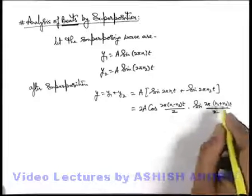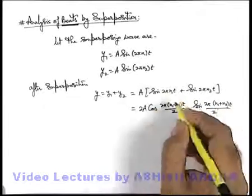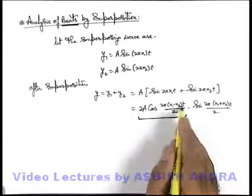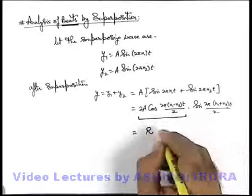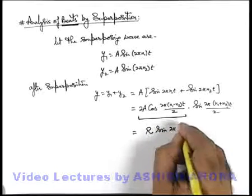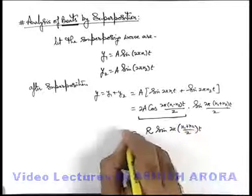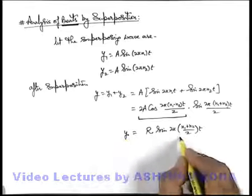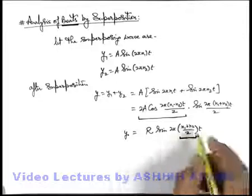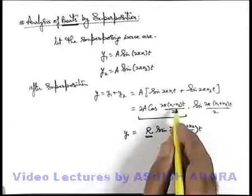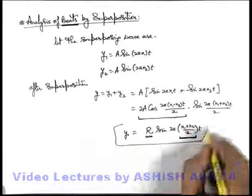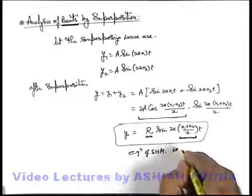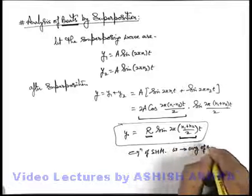Here you can see that n1 plus n2 by 2 is the frequency which is the average of the two, and this is the difference. So this whole term, which is varying with time at a relatively very low frequency, we can write it as R. So this will be R sine of 2π (n1 plus n2) by 2 times t. This is the resulting displacement of a medium particle. We can say this medium particle is oscillating with the frequency which is the average of the two frequencies, and R is the amplitude of oscillation which is also dependent on time. So we can say this is an equation of SHM, which has frequency equal to the average of ω1 and ω2.